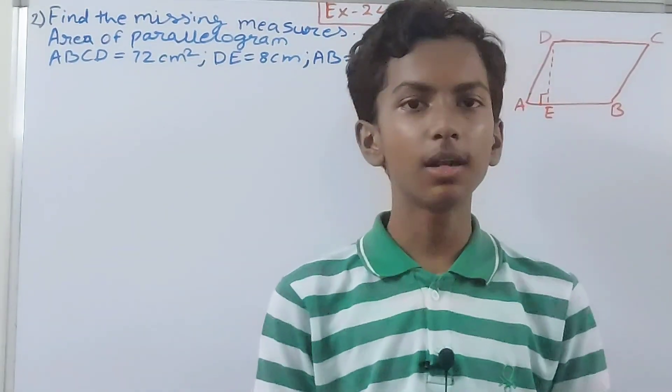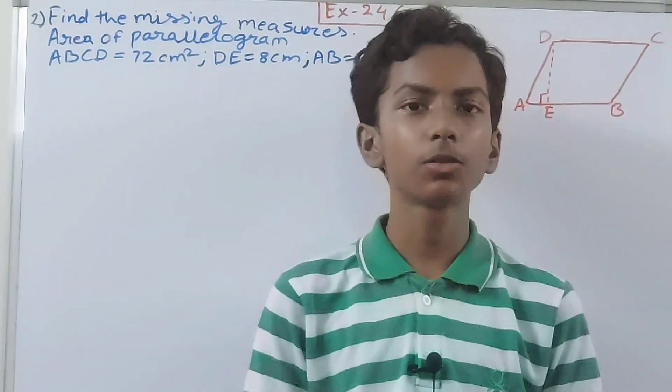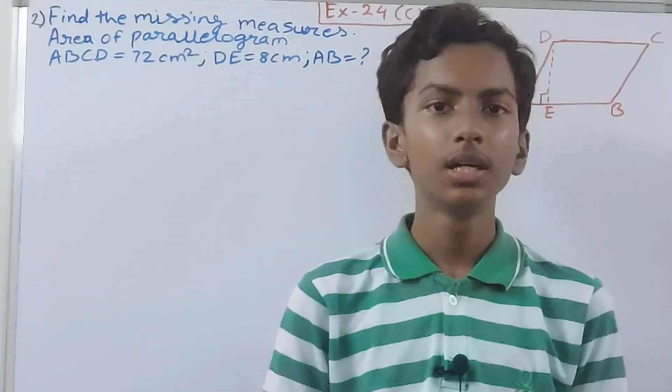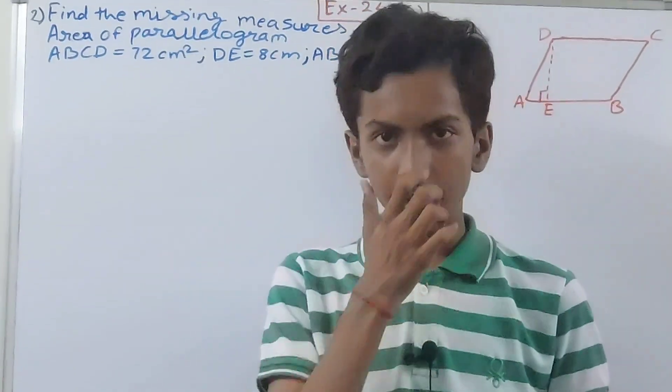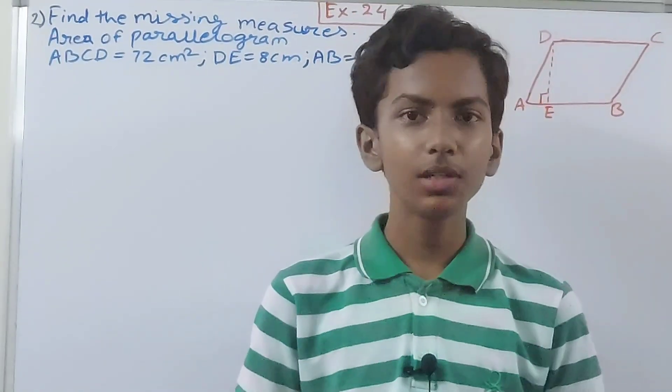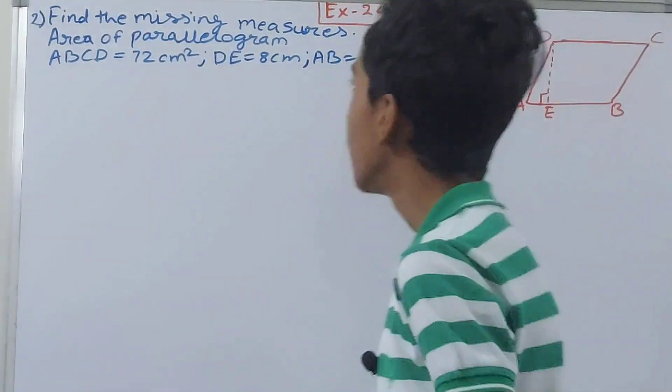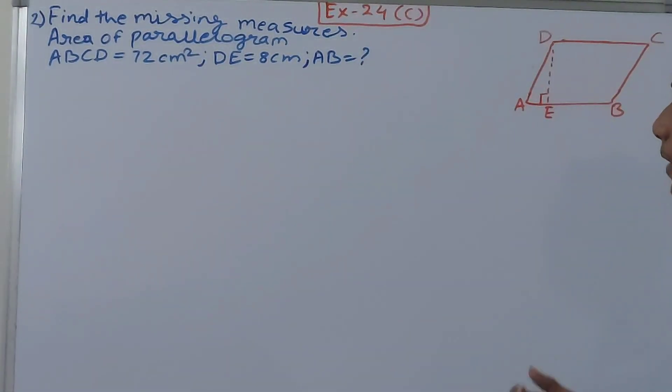Hello friends, welcome back to my YouTube channel Unlocker Learning. In this video, we are going to solve ICAC mathematics class 7 chapter 24, area and perimeter, exercise 24C question number 2.